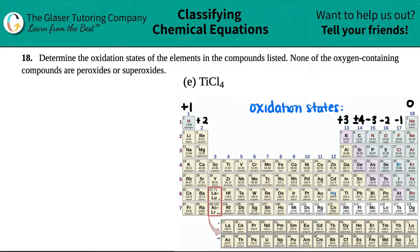Number 18. Determine the oxidation states of the elements in the compounds listed and none of the oxygen-containing compounds are peroxides or superoxides. In this case, we don't have any oxygen, so who cares?